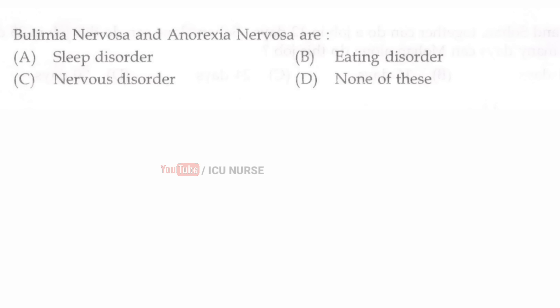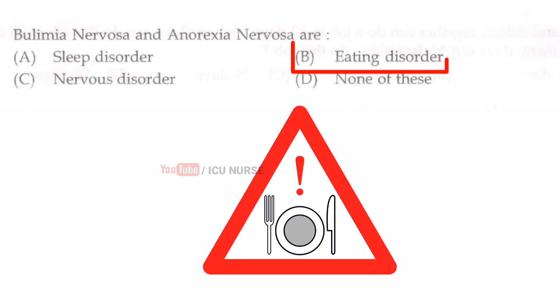Bulimia nervosa and anorexia nervosa are? The correct answer is B, eating disorders. Bulimia nervosa and anorexia nervosa are eating disorders.